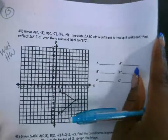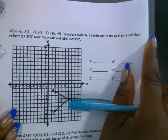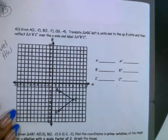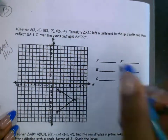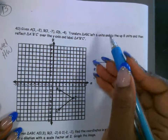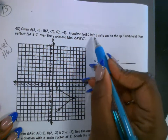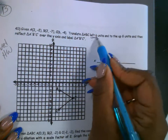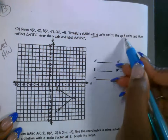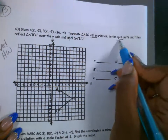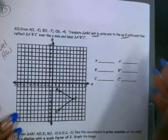Make sure you try the problems first — just try them first. All right, so now we're going to translate. We're going to do 6 units to the left and 8 units up.